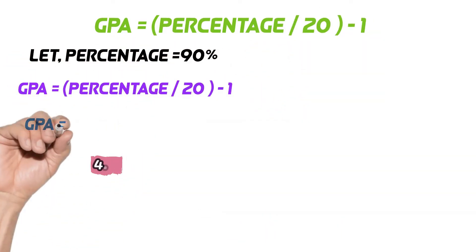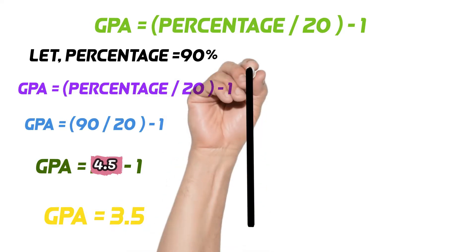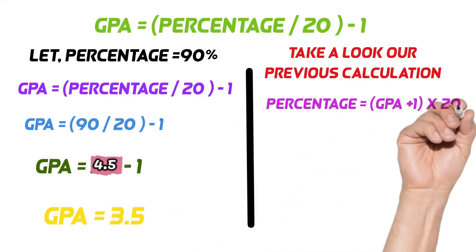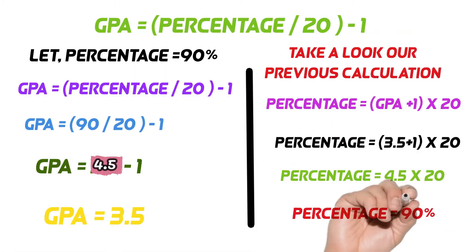Let we want to convert 90% into GPA. We put the percentage number in a formula when 90 divided by 20, we get 4.5 number. Now we need to subtract 1 from 4.5. We will get a 3.5 GPA.